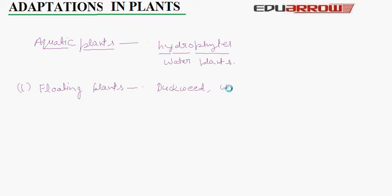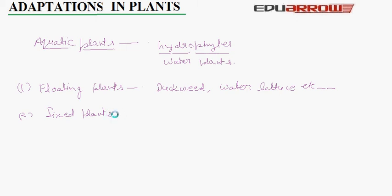The second group is fixed plants. These plants remain fixed to the bottom of the pond. They have long, hollow stems and broad leaves. The leaves float on the surface of the water. They breathe through pores that water does not block. Lotus and water lily are examples of fixed plants.